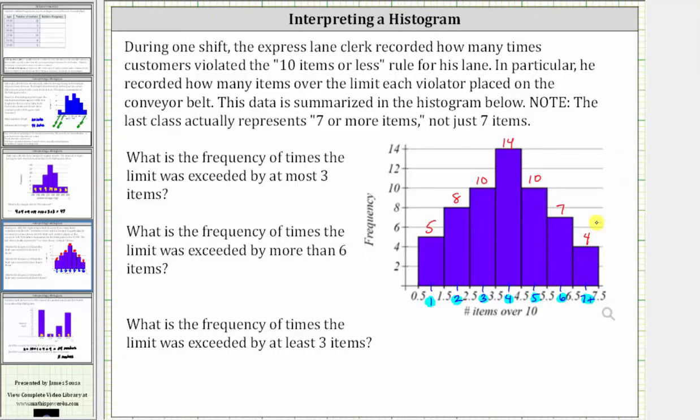Now let's answer the questions. What is the frequency of times the limit was exceeded by at most three items? If we let x equal the number of items over the limit, exceeding by at most three items would be when x is less than or equal to three, which would include the classes or categories of one, two, as well as three. Adding the frequencies, we have five plus eight plus ten, which is twenty-three. The number of times the limit was exceeded by at most three items was twenty-three times.